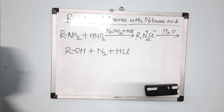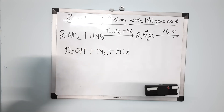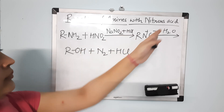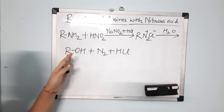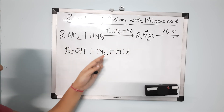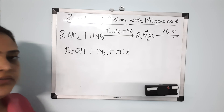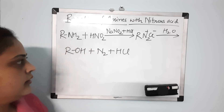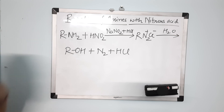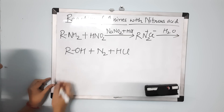You will get alcohol — ROH — plus N₂ nitrogen gas, plus HCl. This is the reaction of primary aliphatic amine with nitrous acid. First the diazonium salt is formed, then it is unstable, so you get alcohol, nitrogen gas, and HCl. When nitrogen gas is released, bubbles are formed — this is the characteristic of primary amine.